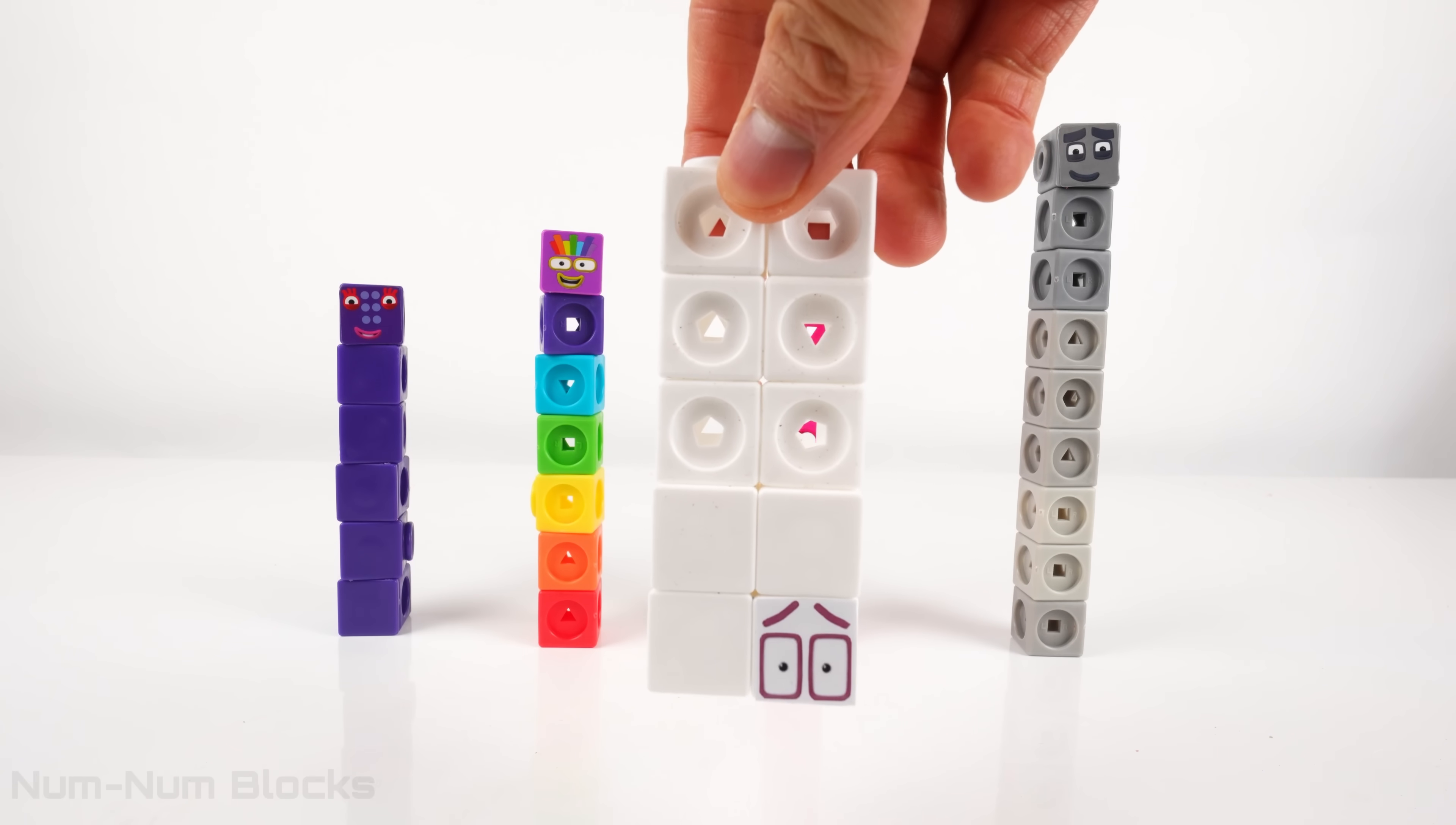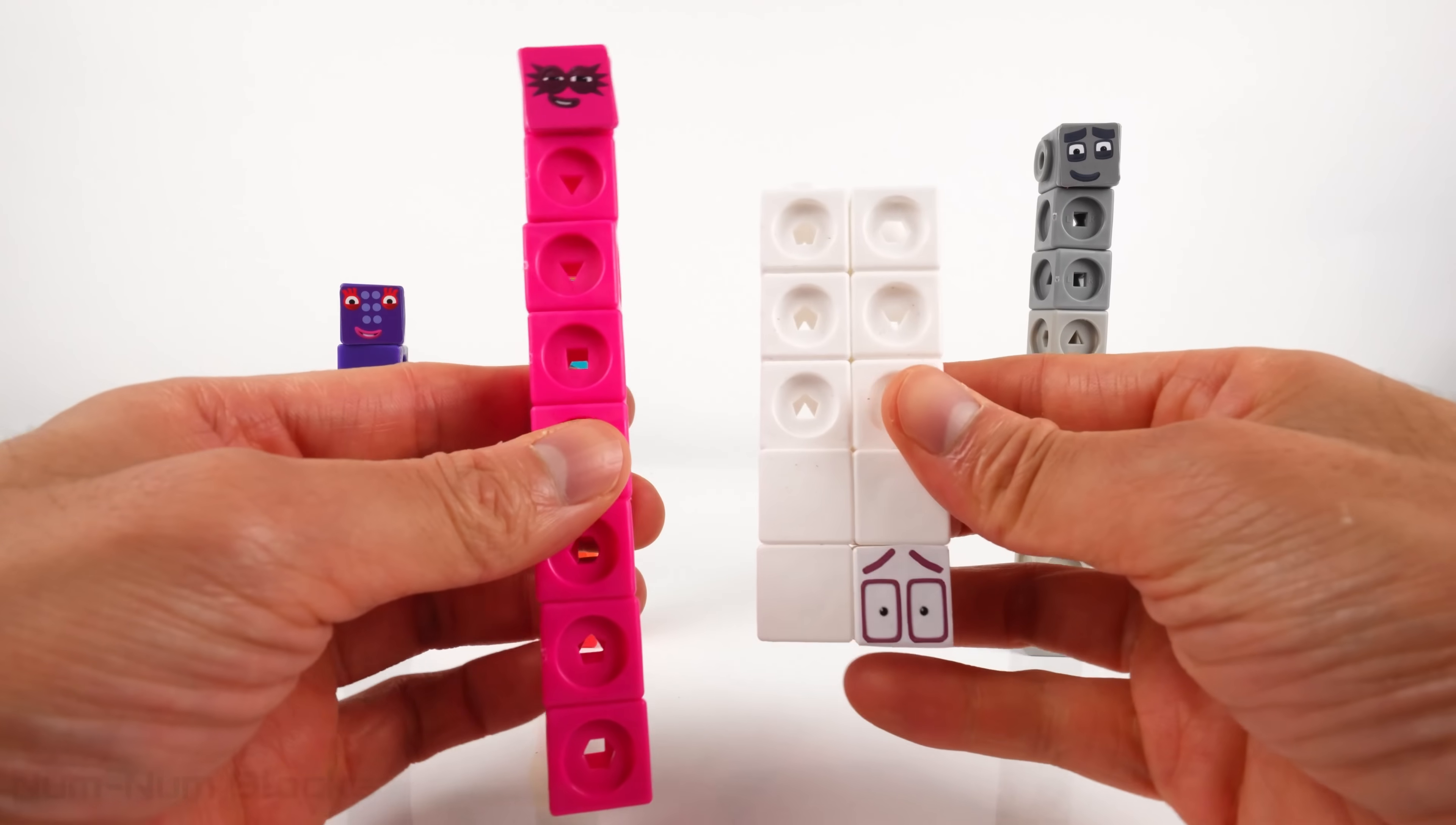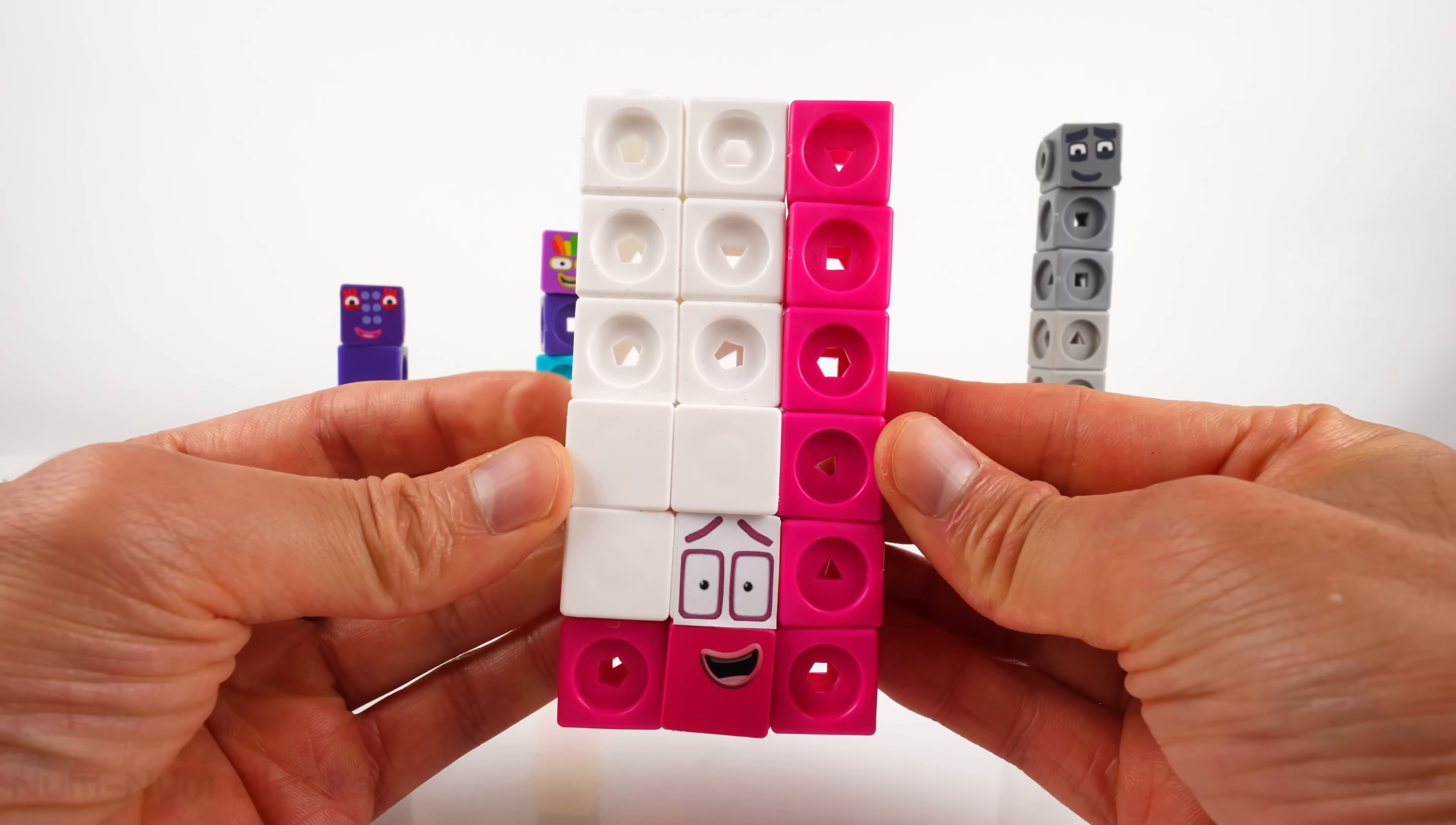What number do we add to 10 to get to 18? 9? No. How about 8? Yeah! 8 plus 10 equals 18. Let's smash these numbers together. Alright, we built 18. 18!